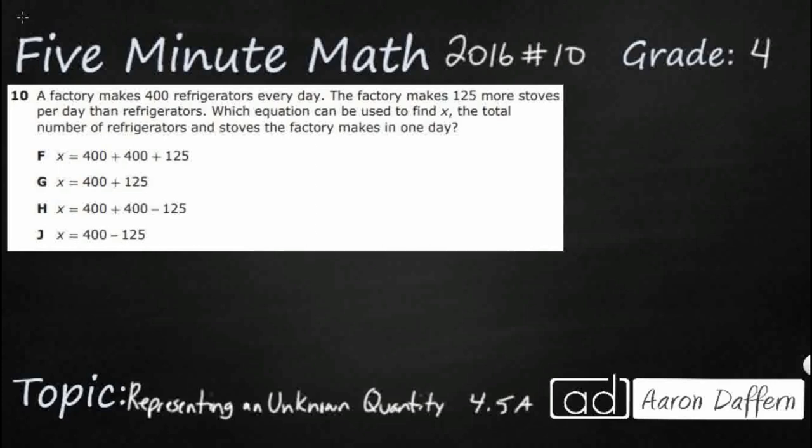A factory makes 400 refrigerators every day. The factory makes 125 more stoves per day than refrigerators. Which equation can be used to find x, the total number of refrigerators and stoves? That's going to be important. We need both refrigerators and stoves in one day.